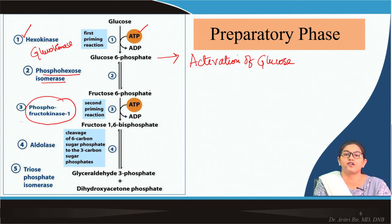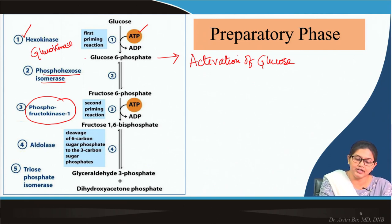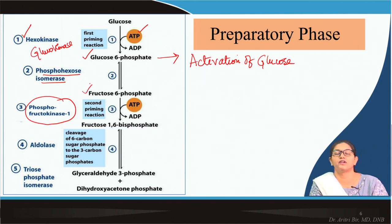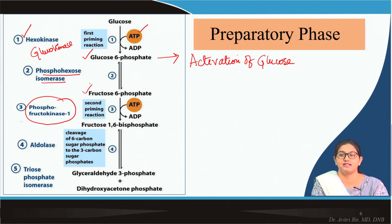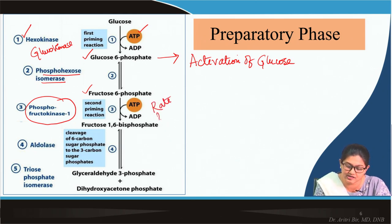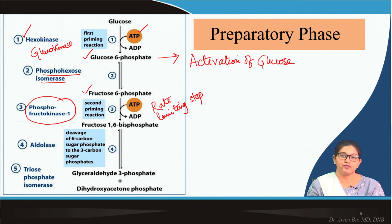Formation of fructose-1,6-bisphosphate is the committed step for glycolysis. The earlier intermediates, glucose-6-phosphate and fructose-6-phosphate, can enter various other metabolic pathways. But fructose-1,6-bisphosphate can only enter glycolysis. So this is the second priming reaction, as well as the committed step and the rate-limiting step of glycolysis. The phosphate group donor here is also ATP.